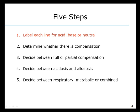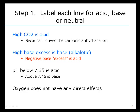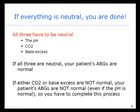Let's look at the steps in detail. Step one: label each line for acid, base, or neutral. High CO2 is acid because it drives the carbonic anhydrase reaction. By contrast, high base excess is alkalotic, or base. Negative base excess means that it's acidic. pH below 7.35 is acidotic, and above 7.45 is base. For the didactic purposes of this screencast, oxygen does not have any direct effects. If all three — the pH, the CO2, and the base excess — are in the normal or neutral range, your patient's arterial blood gases are normal. However, if either the CO2 or the base excess are not normal, your patient's arterial blood gases are not normal, even if the pH is normal, so you have to complete this process.